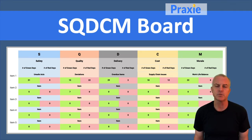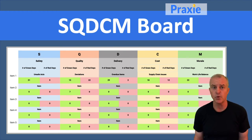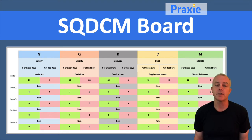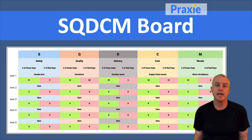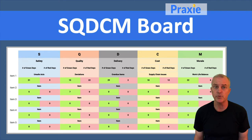Safety is probably the easiest one because you don't want any incidents or accidents on the shop floor. Ideally, your target would be zero for each day. The idea with this huddleboard is that you would track by day how you're doing, and you either have a red day or a green day, for example.